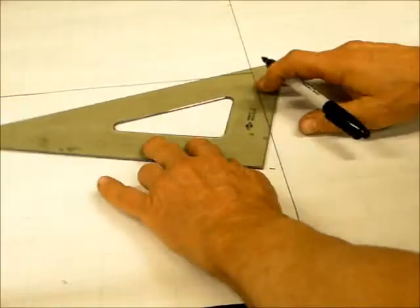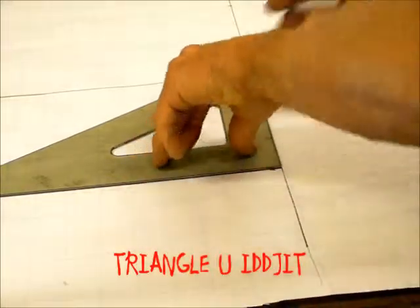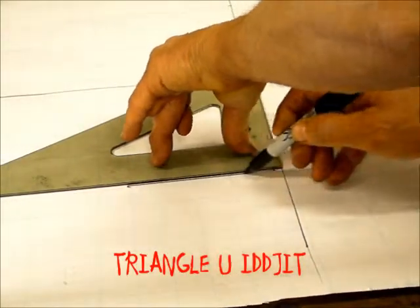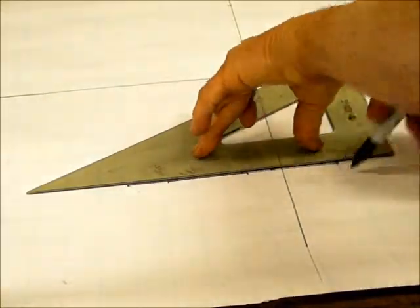Take the square, line that up on that first line. Draw a line, continue it down below it. Same thing on the other side.